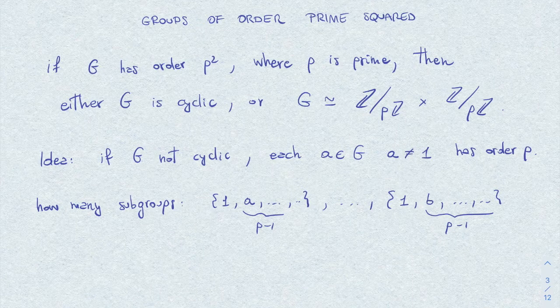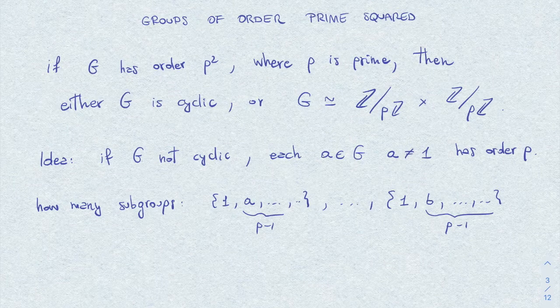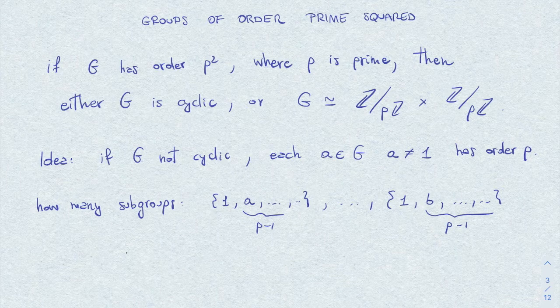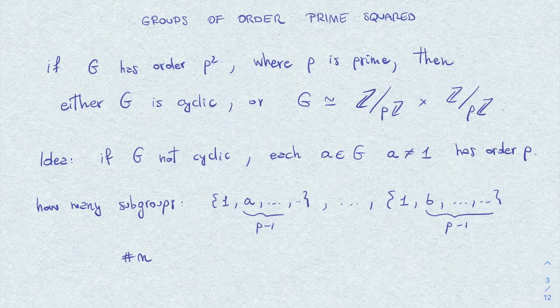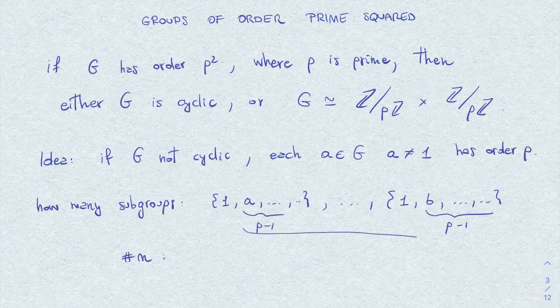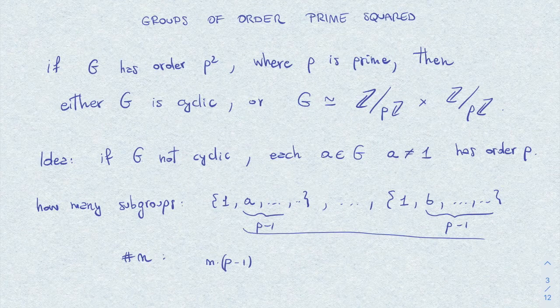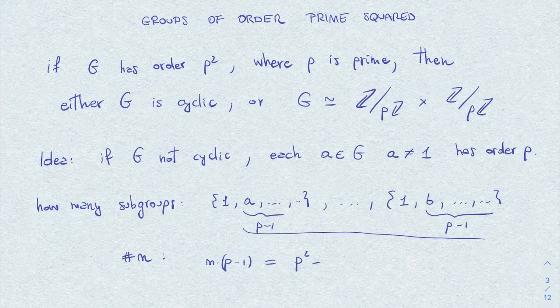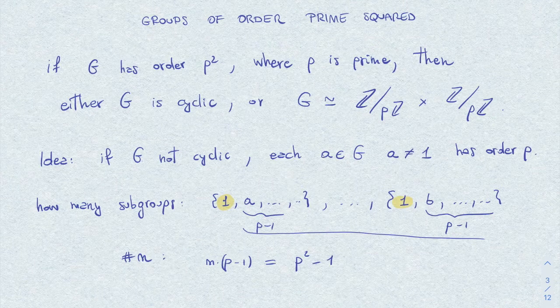all the elements of this group. Of course, the element 1 will be, so all these groups will be disjoint, except from the identity element 1. So here, the number n of such subgroups of order p has to satisfy that n times this p minus 1 element has to be the total number of elements in G, which is p squared, of course, minus 1 element, which is the identity that here repeats.